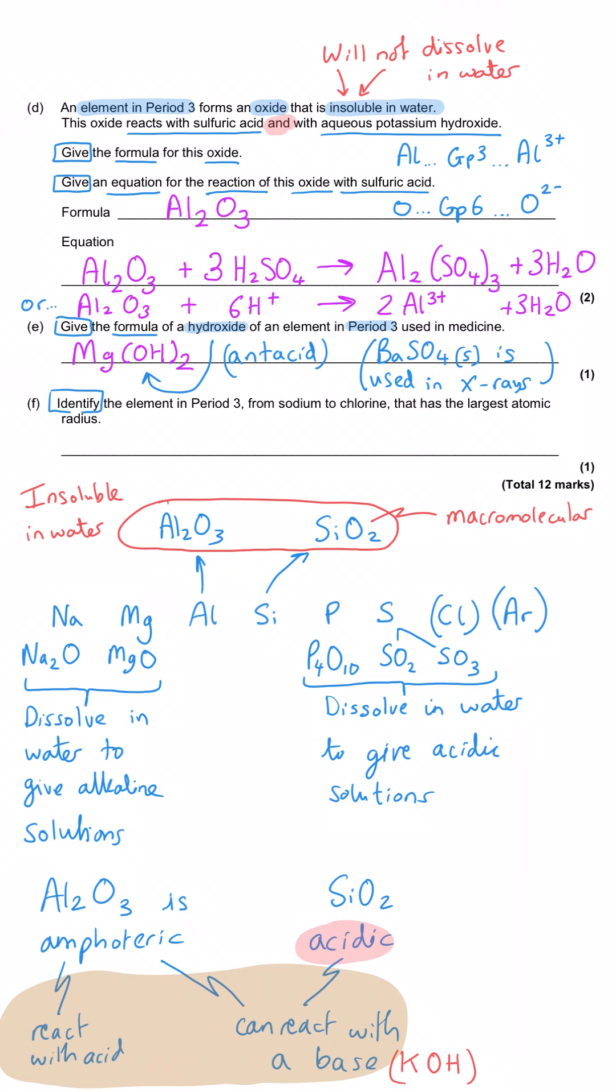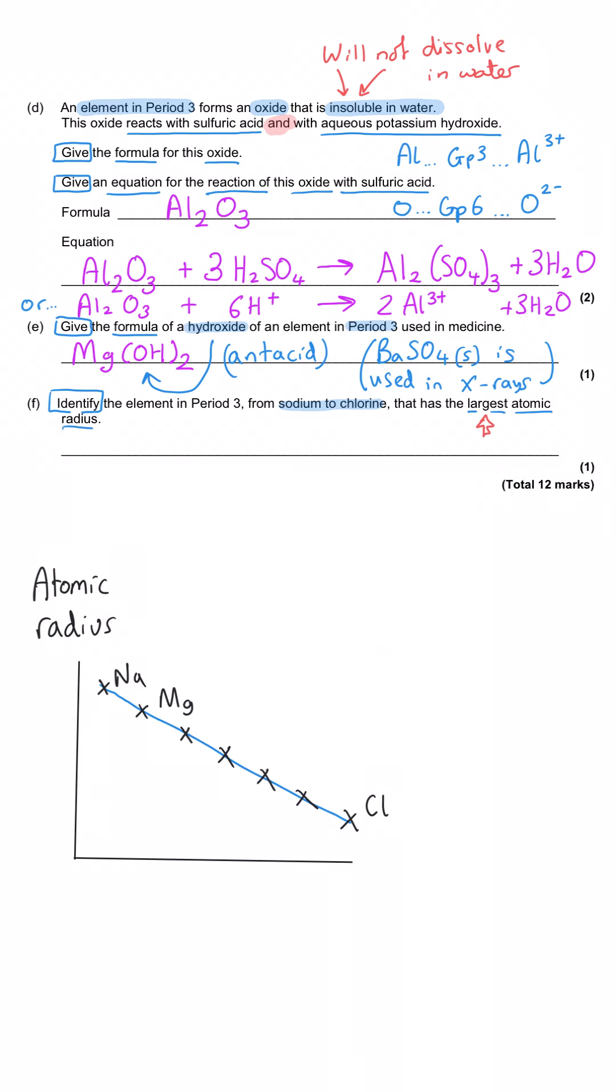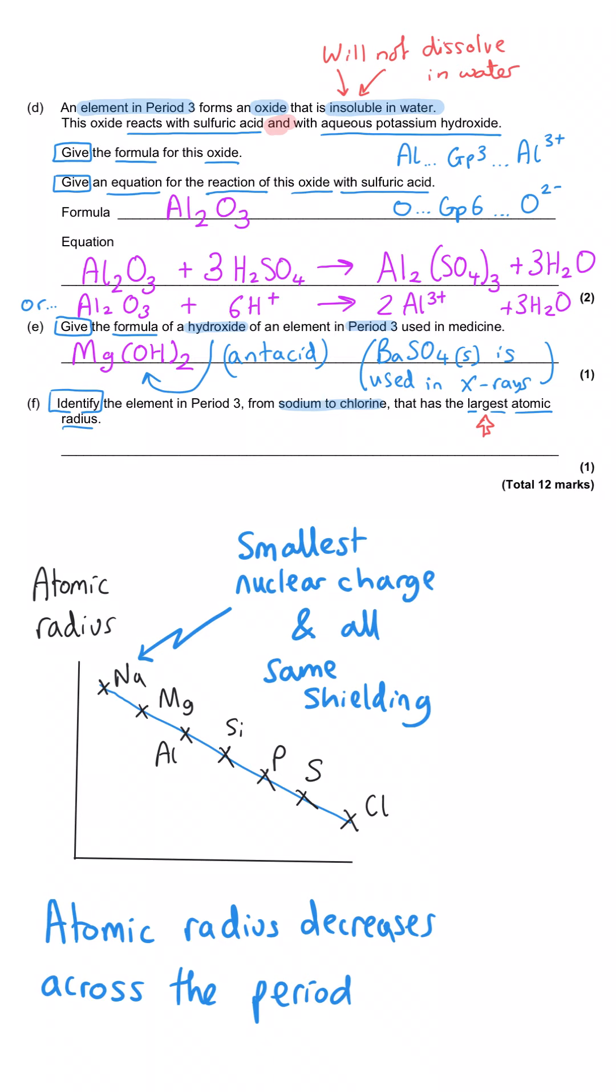And then last of all, identify the element in period three from sodium to chlorine that has the largest atomic radius. Now they've missed out the noble gas but that's not necessarily an issue here. In fact, because the atomic radius decreases across the period for any period, they've therefore given us the nice easy choice that we have to go for sodium. The group one element in any period will have the largest atomic radius of that particular section of the period.